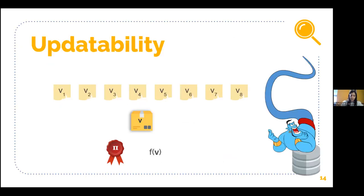Updateability captures the fact that we want our prover to be able to change some positions or one position in the vector.